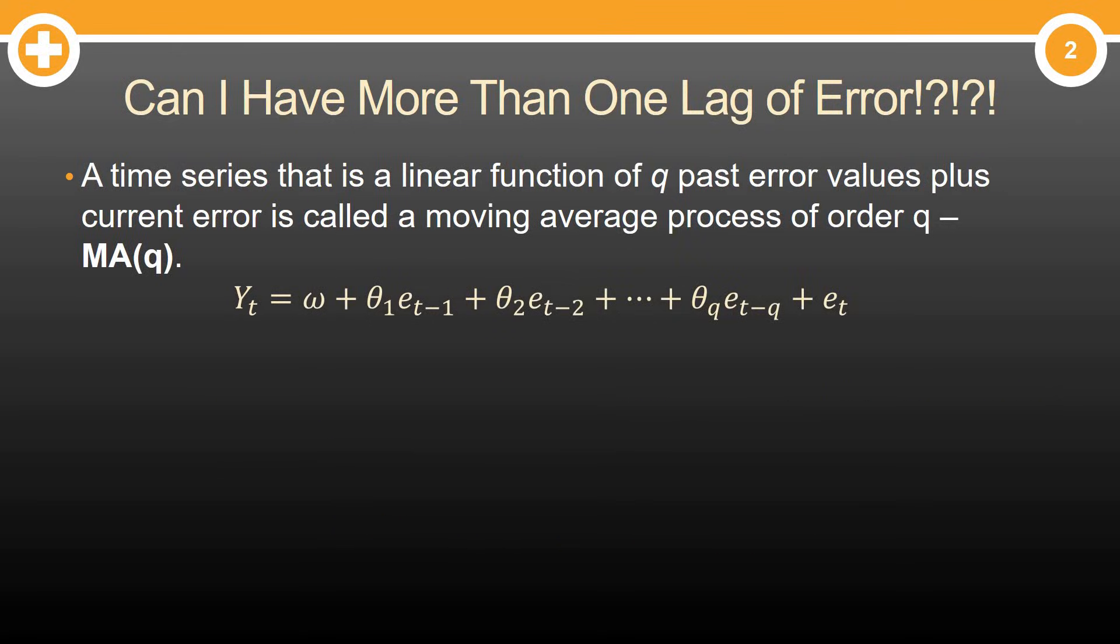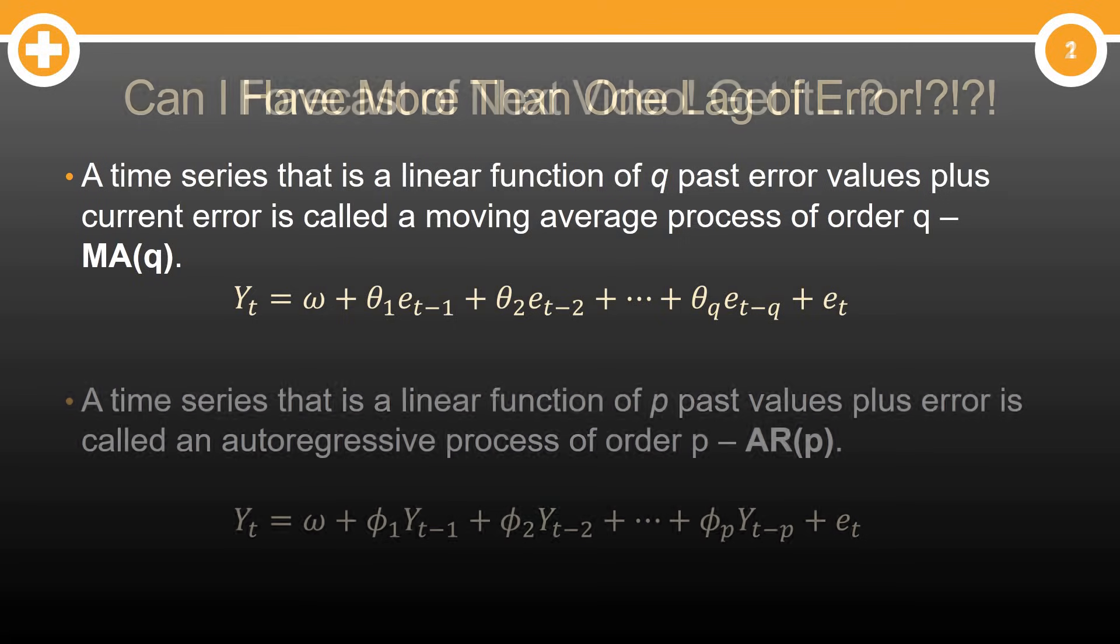Let's finish this up. Of course, you shouldn't limit yourself to just one error in the past. You can have as many as you'd like. We call them Q. And you can have an MA of Q. Essentially, a moving average of order Q.